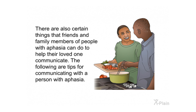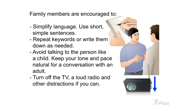There are certain things that friends and family members of people with aphasia can do to help their loved one communicate. Family members are encouraged to simplify language and use short, simple sentences. Repeat key words or write them down as needed. Avoid talking to the person like a child — keep your tone and pace natural for a conversation with an adult. Turn off the TV, a loud radio, and other distractions if you can.